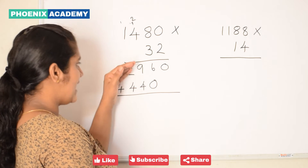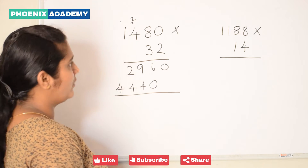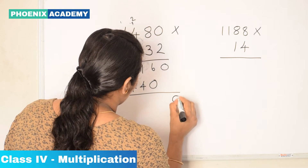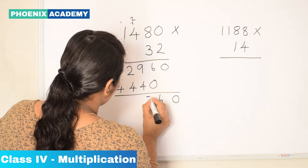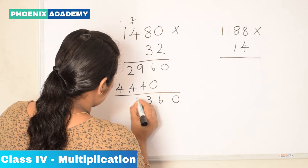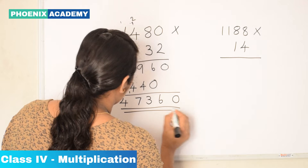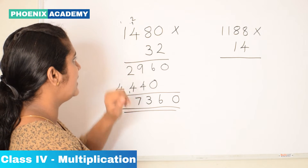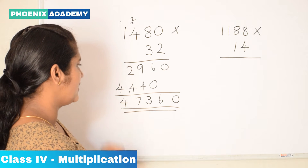Then let's add these 2 partial products to get the final product. 9 plus 4 is 13. 2 plus 4 is 6. 6 plus 1 is 7. So the product of 1,480 and 32 is 47,360.